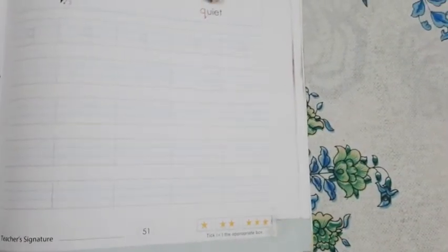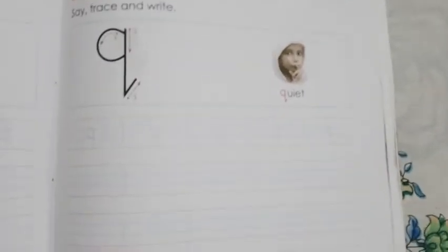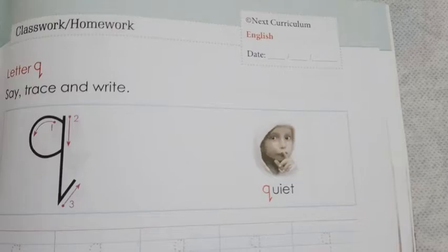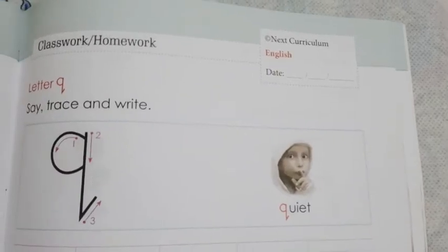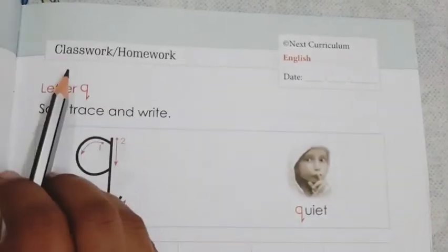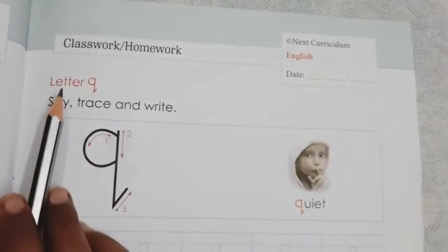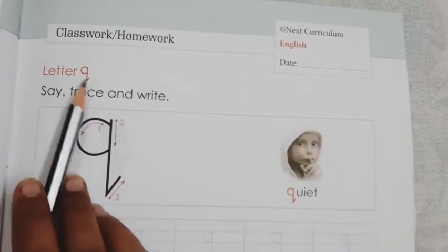Now come to page number 51 as well. Okay, here also we have to write the practice of small letter q. Here we have to mention today's date over here and please put a check on classwork. Here we have to write letter q, small q, say trace and write.